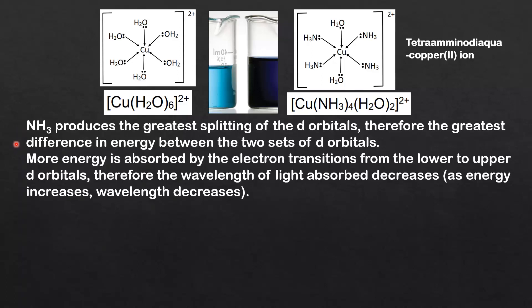Because ammonia produces the greater splitting of the d orbitals, more energy is absorbed by the electron transitions from the lower to upper d orbitals. Therefore the wavelength of light absorbed decreases. As energy increases, wavelength of light decreases.